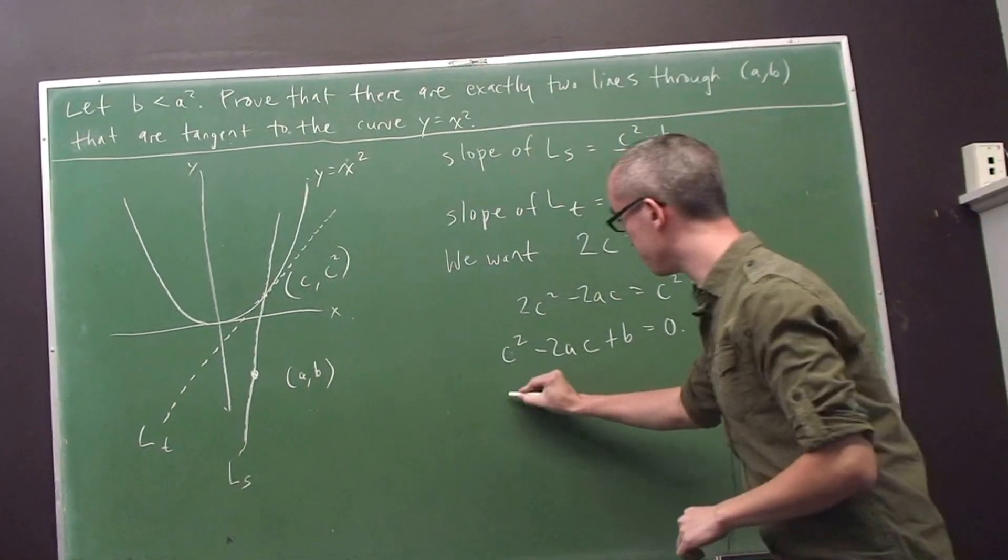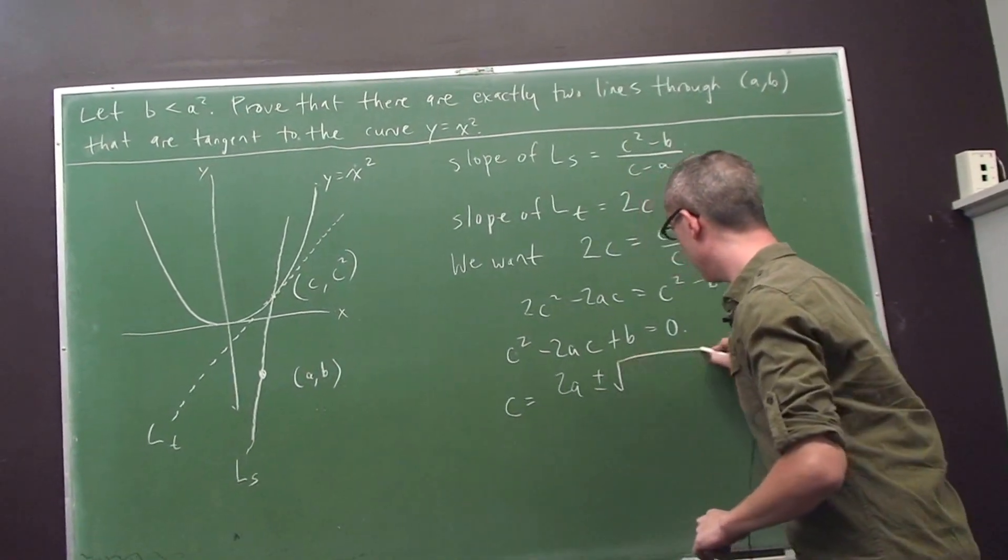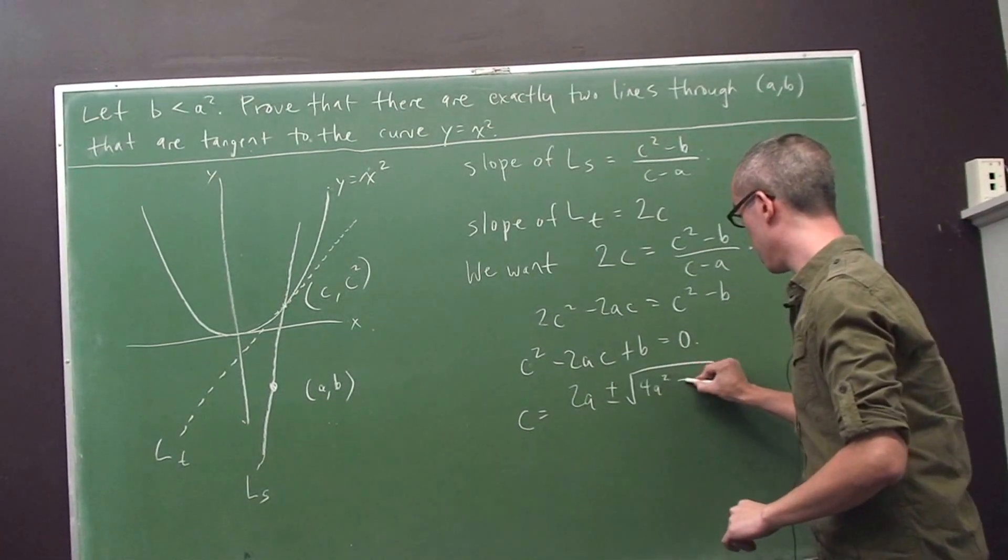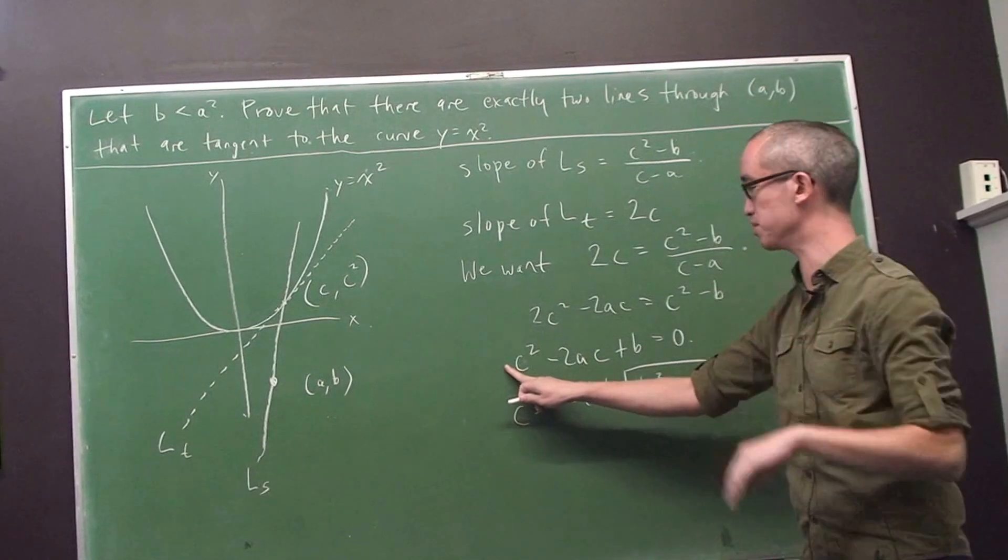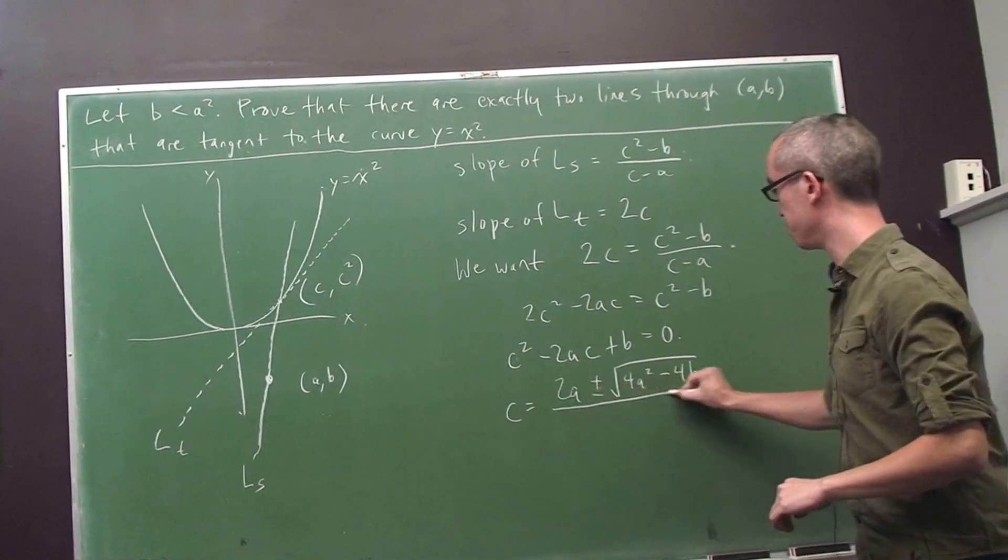And I want to find the values of c that satisfy this quadratic equation. So using the quadratic formula, c is equal to 2a plus or minus √(4a² minus 4 times 1, because remember, c is our variable here, times b) all over 2.